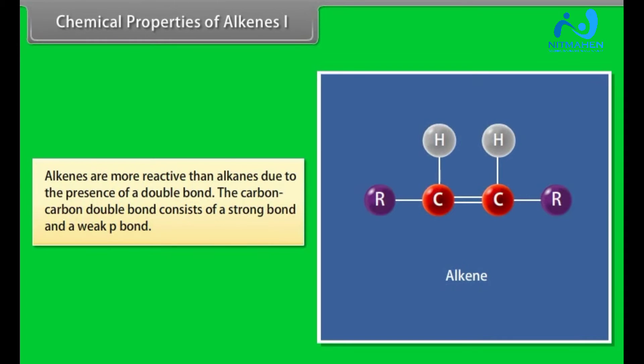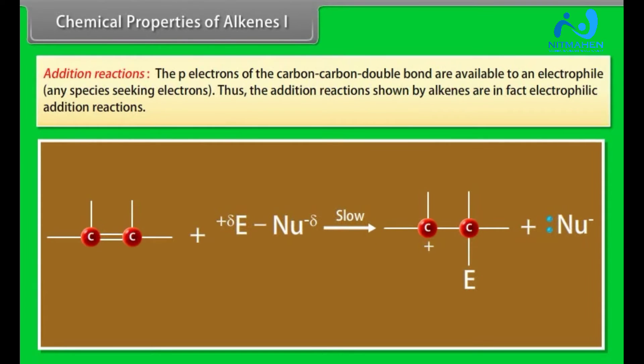Chemical Properties of Alkenes Part 1. Alkenes are more reactive than alkanes due to the presence of a double bond. The carbon-carbon double bond consists of a strong sigma bond and a weak pi bond. Addition Reactions: The pi electrons of the carbon-carbon double bond are available to an electrophile, any species seeking electrons. Thus, the addition reactions shown by alkenes are in fact electrophilic addition reactions. Addition of Hydrogen: Alkenes add hydrogen in the presence of platinum or nickel catalyst to form alkanes. The reaction termed as hydrogenation is an exothermic reaction.